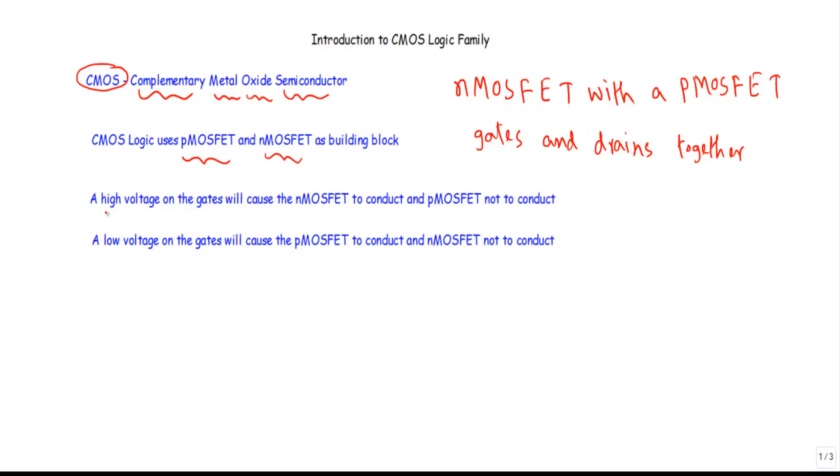When the gate voltage will be high, when we will apply a high voltage at the gate, the n-MOSFET of the CMOS logic will conduct and the p-type MOSFET will not conduct.